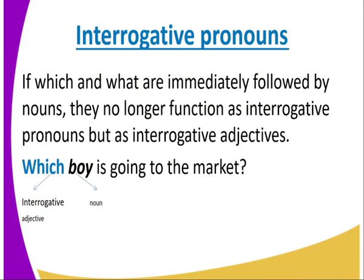An important note on interrogative pronouns: if 'which' and 'what' are immediately followed by nouns, they no longer function as interrogative pronouns but as interrogative adjectives. So if an interrogative pronoun is followed by a noun, it changes to an interrogative adjective. For example: Which boy is going to the market? Here 'which' is followed directly by the noun 'boy,' so it changes from an interrogative pronoun to an interrogative adjective.